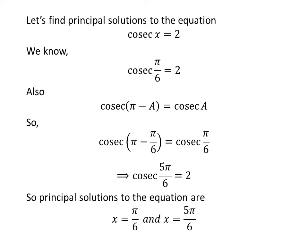So, the principal solutions to the equation cosecant of x is equal to 2 are pi upon 6 and 5 times pi upon 6.